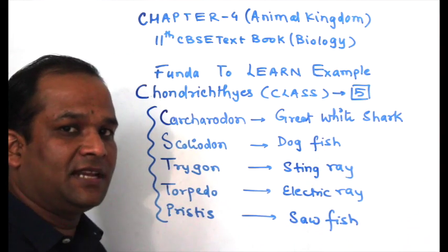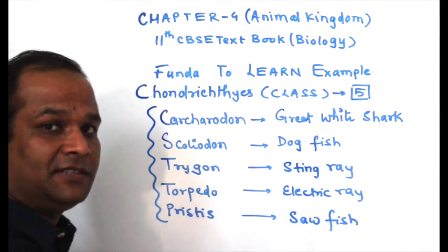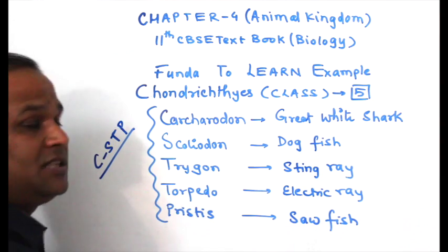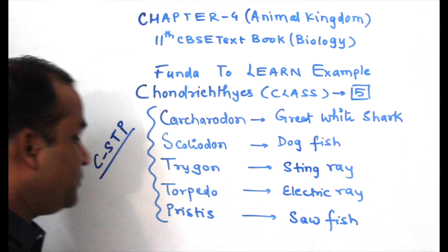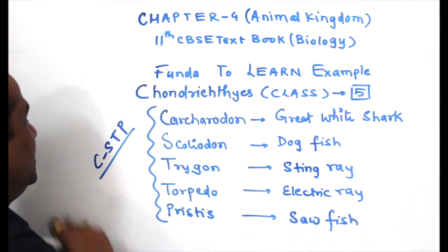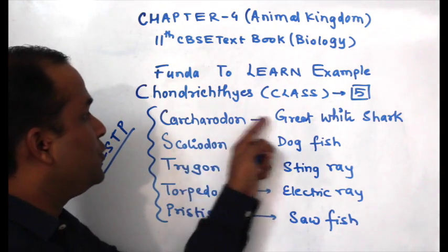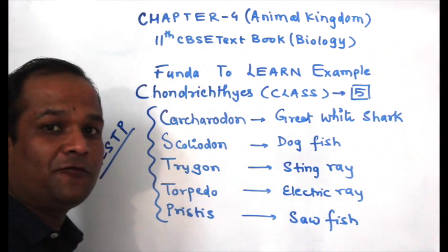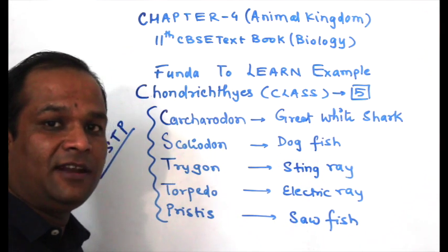How many examples are given? Five examples are given. The trick to learn these five examples is the mnemonic CSTP — STP stands for Standard Temperature and Pressure. C stands for Carcharodon, that is the great white shark. S stands for Scoliodon, that is dogfish. Scoliodon is known as dogfish because its smelling power is equivalent to a dog.